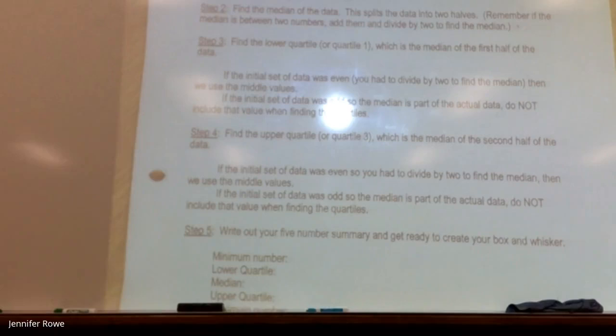So the first thing you're going to do, they're going to give you a list of data. Okay. Your job is to put them in order from small to large. You need to make sure that you have, when you've ordered them, that you have the same number of data that you started with. All right. You're going to find the median of the data. So that splits the data in just half. Right. Remember, if the median is between two numbers, then we're going to add them and divide by two to figure out what that median is.